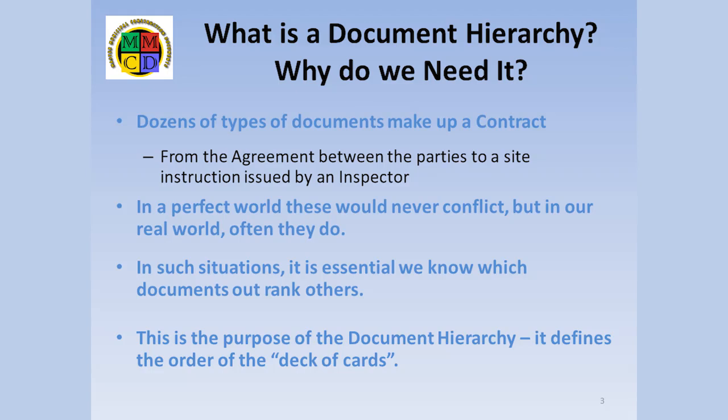There are literally dozens of documents which form the entire contract set. I'm not talking about the number of pages, but actual different types. For example, the most powerful document is the agreement between the owner and the contractor, but everything else flows from this document. But numerous types of documents are part of the tender package. These include general conditions, specifications, standard detail drawings, and specific project design drawings.